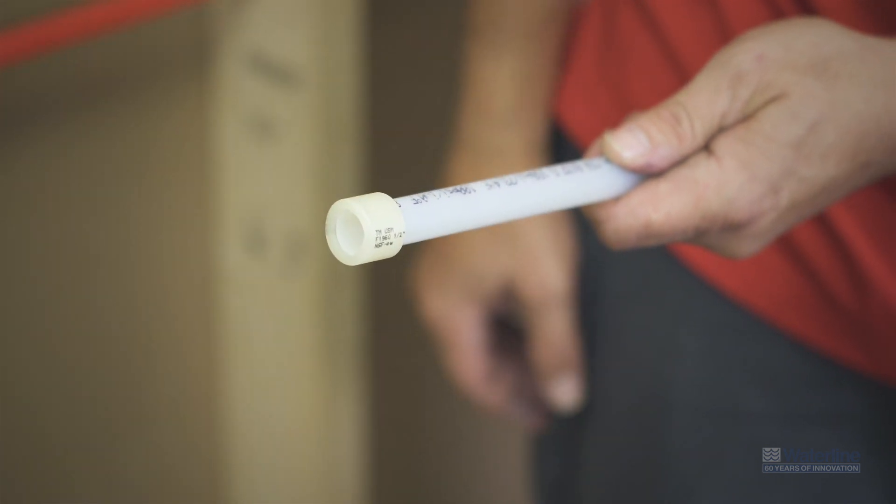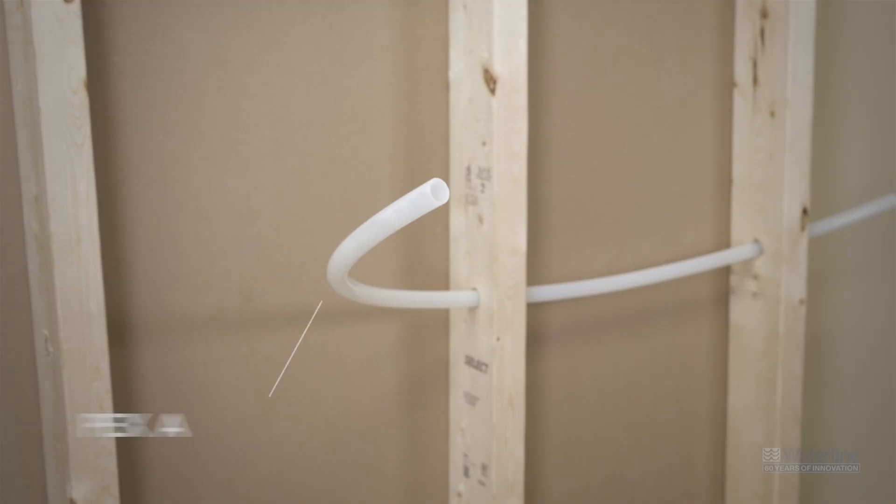Note if you're adding ColdX fittings to an existing system that is not already using ColdX expansion connections, there are ColdX transition fittings available. And finally you will need ColdX PEX-A tubing. PEX-A tubing is the only type of PEX that can be used for making a cold expansion connection.